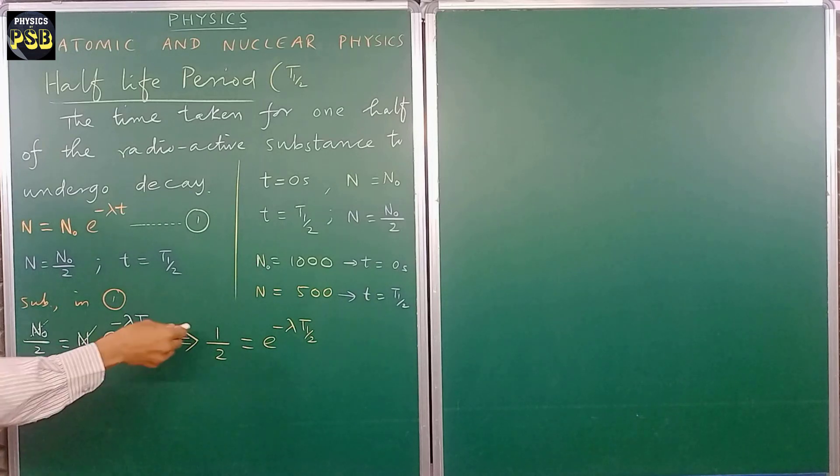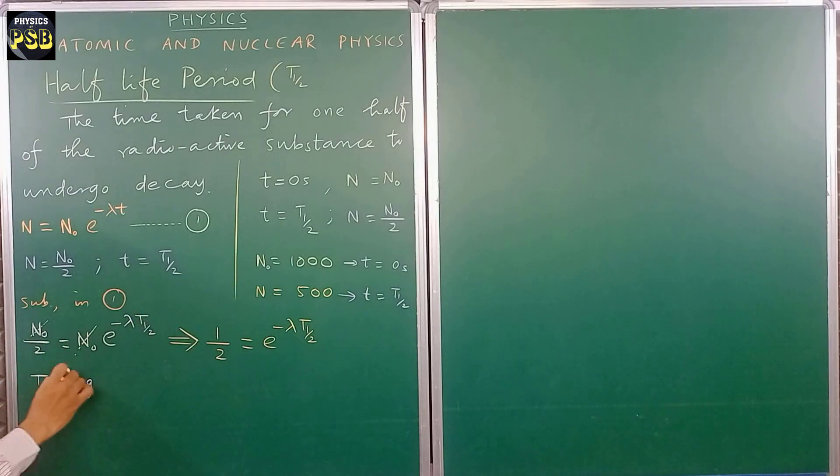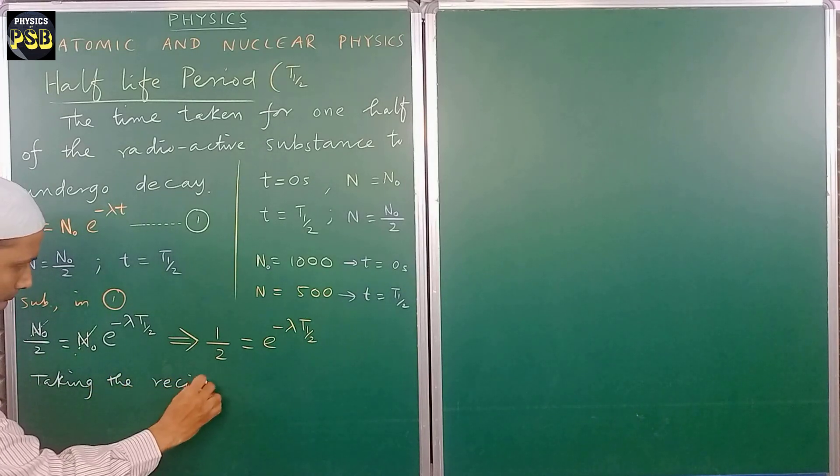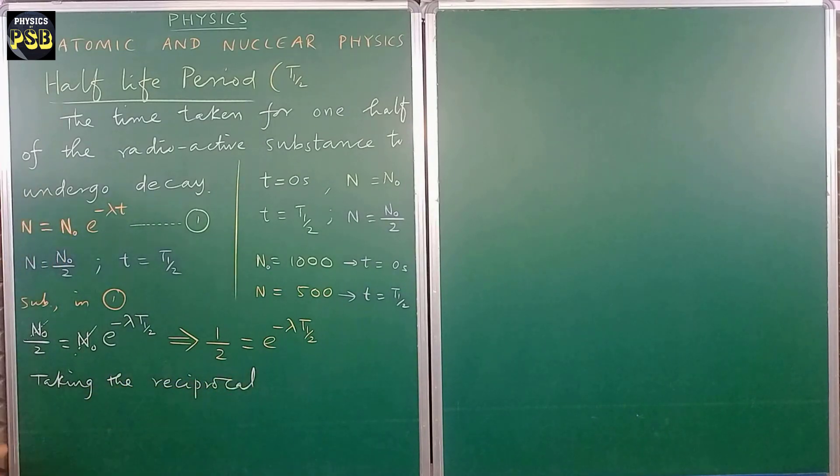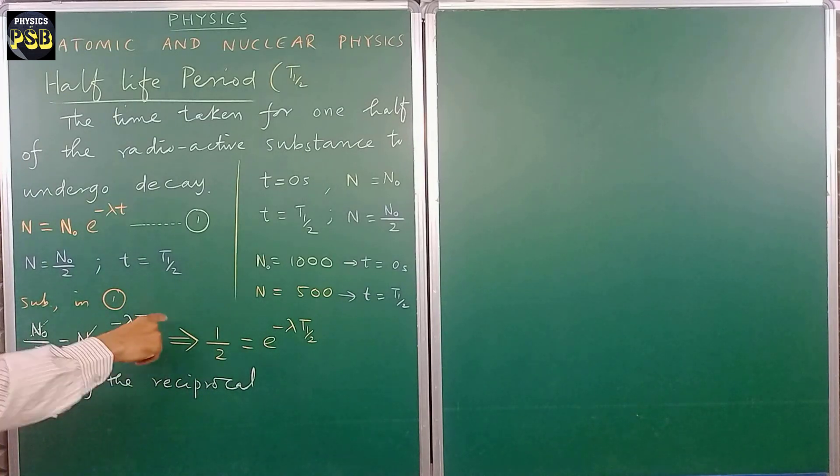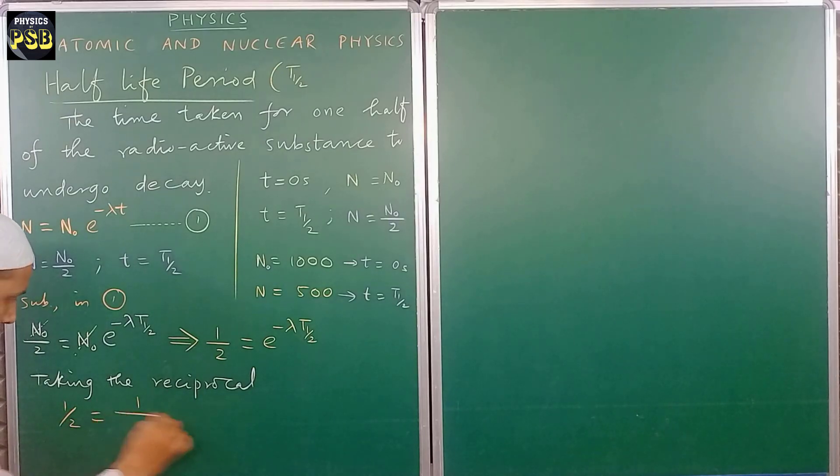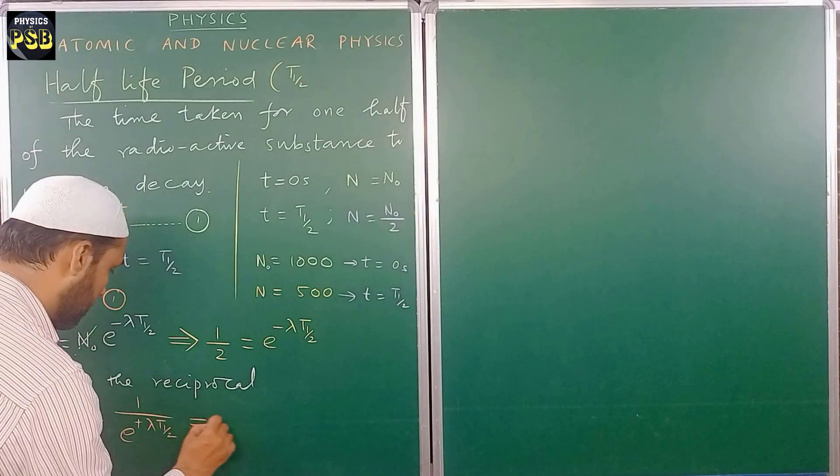Taking the reciprocal. Now before doing so I will simplify, I will expand this equation. 1/2 is written as 1 upon e to the power minus lambda t half. Here minus becomes plus when it is taken to the denominator.